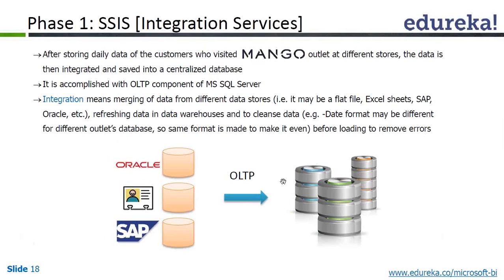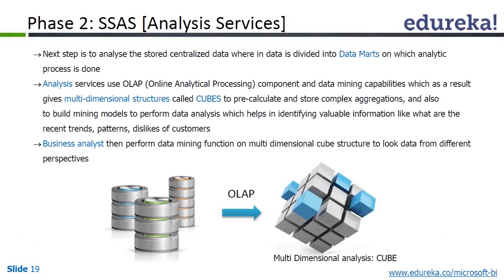What SSIS can do is it has the capability to extract data from different sources and load it into a database. That is what SSIS can do. And once SSIS does the integration from the different variety of sources, the analytics services tool — SSAS — can develop a cube.